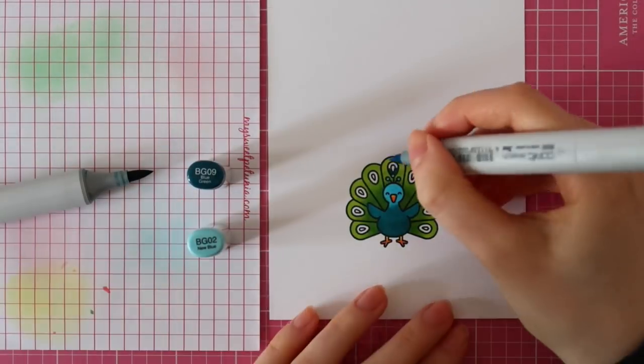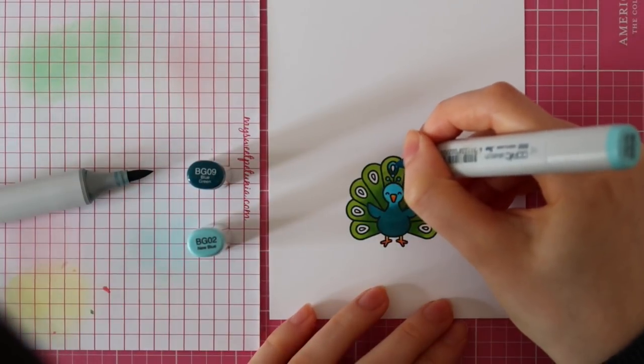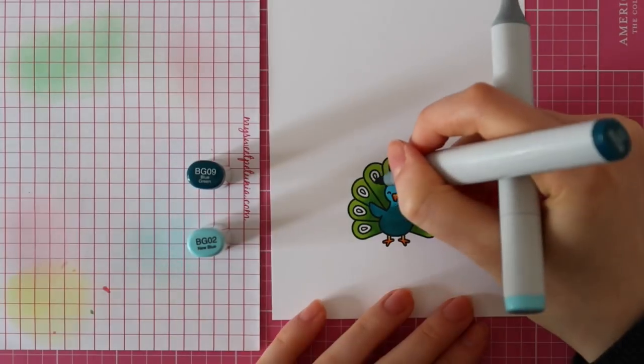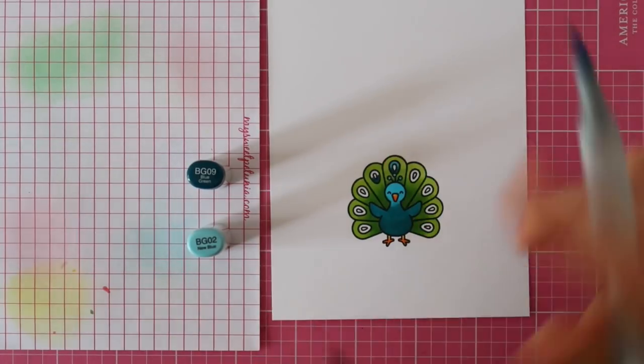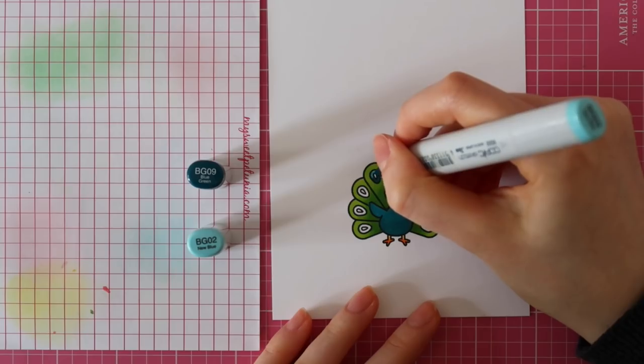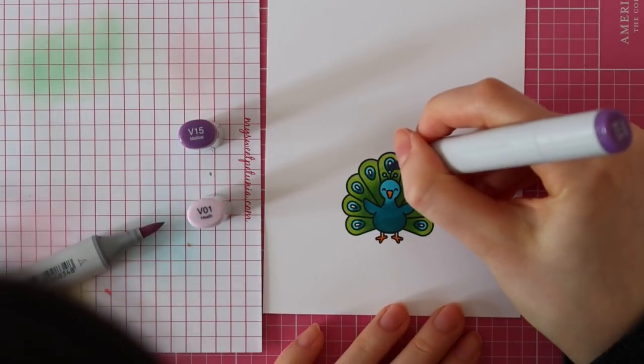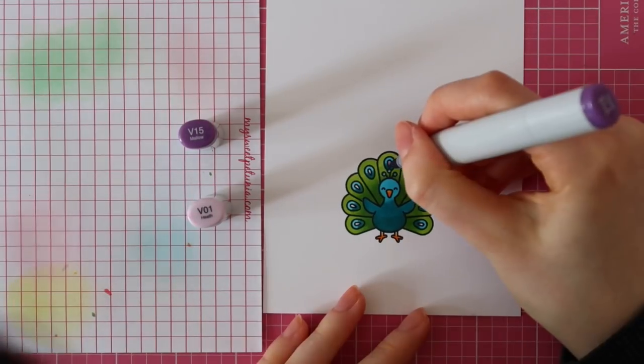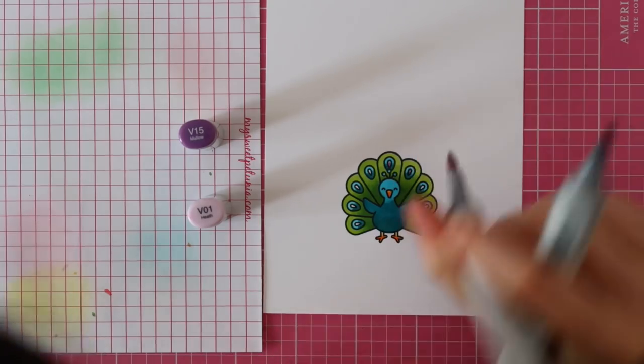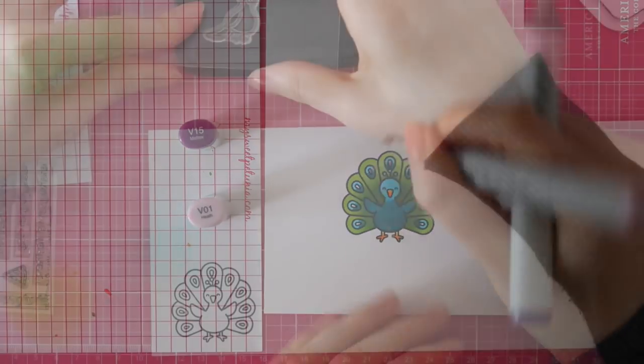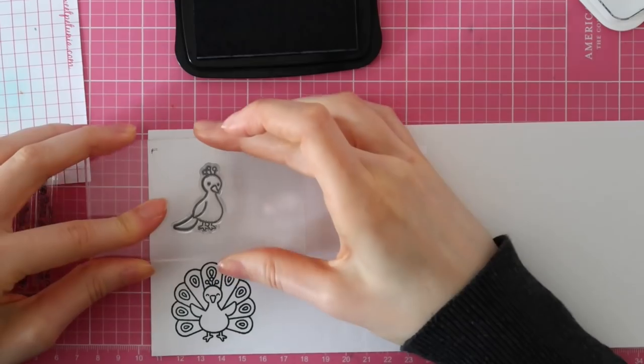Then to color those little things on his feathers—I'm not sure how you call that, the pattern on his feathers I suppose—I'm using BG09 and BG02, and then I'm also going to add in some purple. I'm using V15 and V01 to do so.